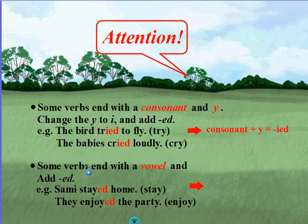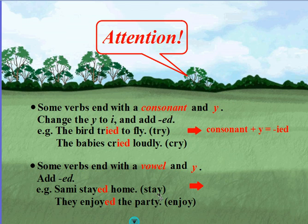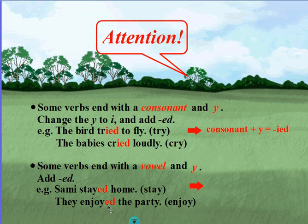Some verbs end with a vowel and the letter y — we only add -ed to show that the action happened in the past. Example: Sammy stayed home. The base verb is stay and it ends with a vowel plus the letter y, so we only add -ed. They enjoyed the party. The base verb is enjoy and it ends with a vowel plus the letter y, so we only add -ed to show the verb happened in the past.